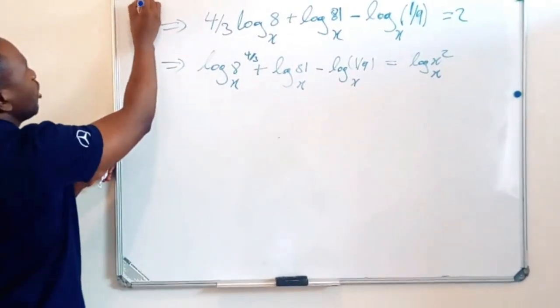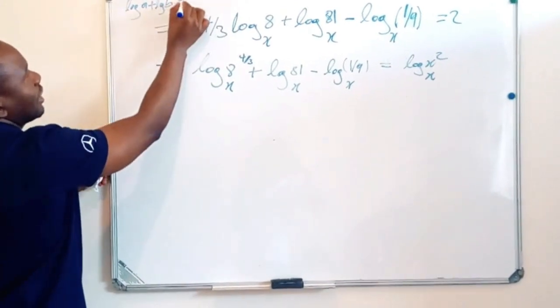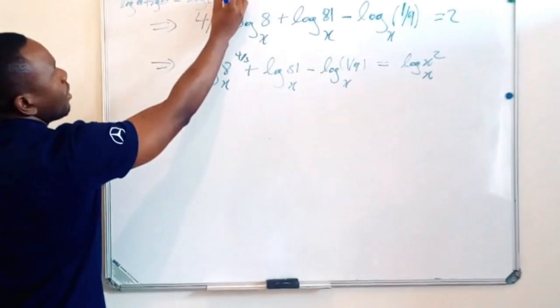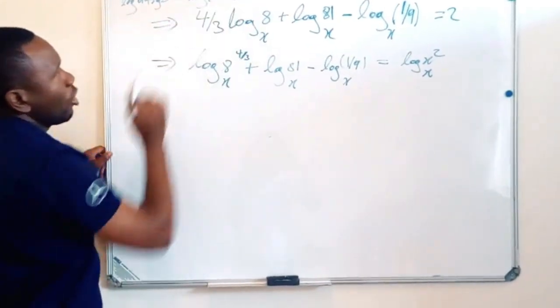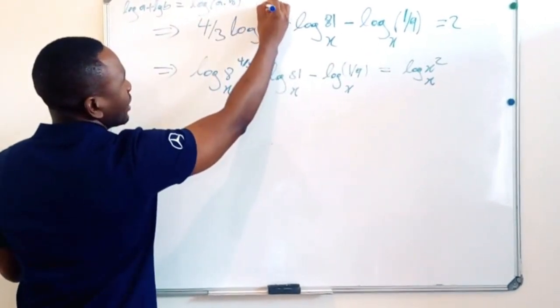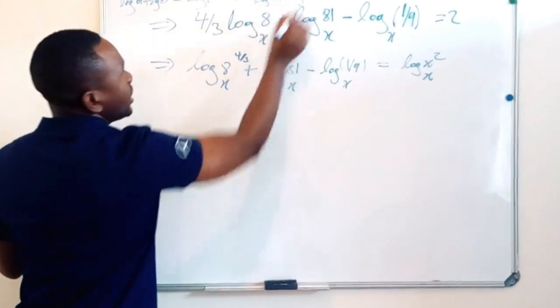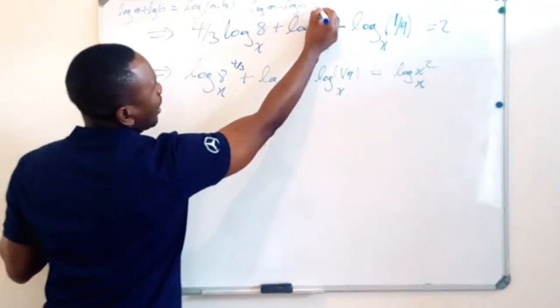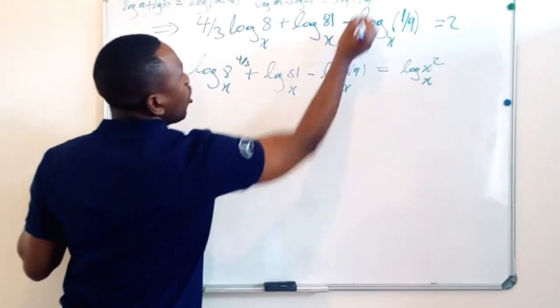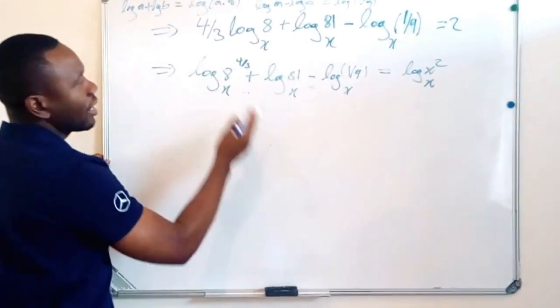So when we have log of a plus log of b, that is equal to log of a multiplied by b. And when we have log of a minus log of b, that is also equal to log of a over b. So here we have a plus and there we have a minus.